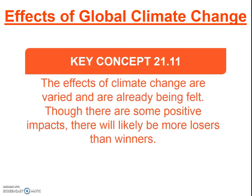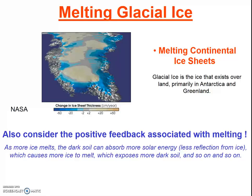Next let's look at some of the effects of climate change. First, melting ice. There are many types of ice that can melt. This slide deals with the melting of continental ice sheets, a type of glacial ice — ice that exists on land. The continental ice sheets are those in Antarctica and Greenland. The melting of continental ice sheets leads to sea level rise. Ice sheets contain an enormous quantity of frozen water; in fact, most of the earth's fresh water is in these two ice sheets.